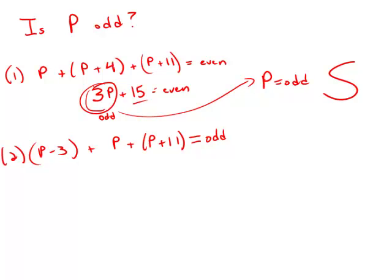Now, let's forget statement number one. Move on to statement number two. The sum of p minus 3 plus p plus p plus 11 is odd. Well, again, combining, we get 3p plus 8 equals an odd number.